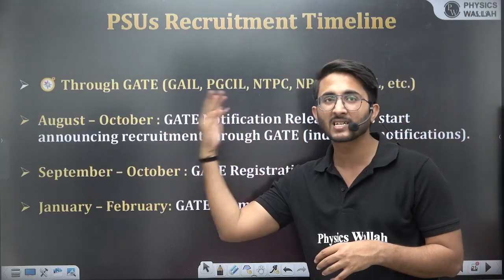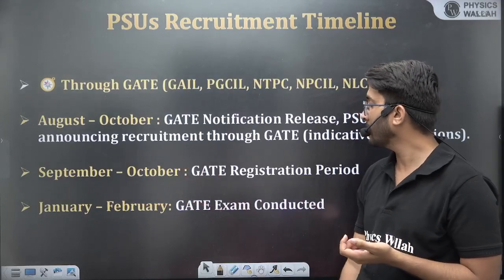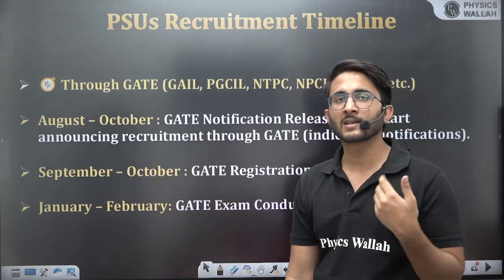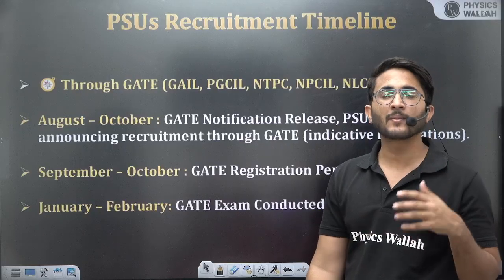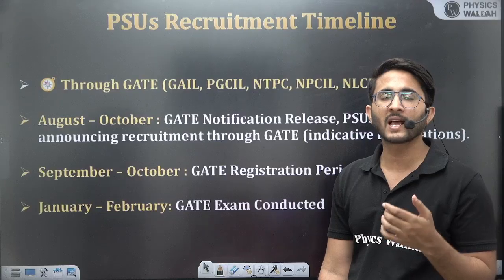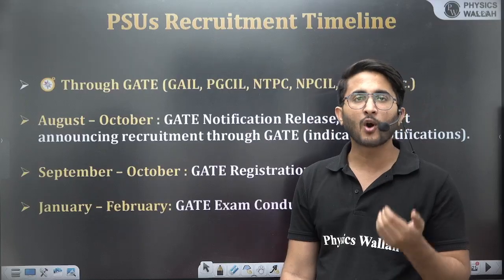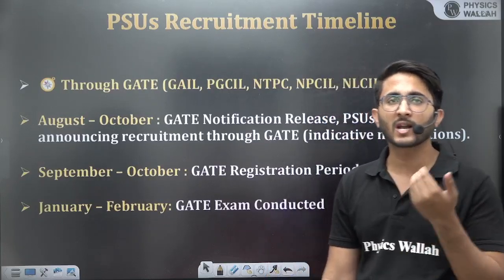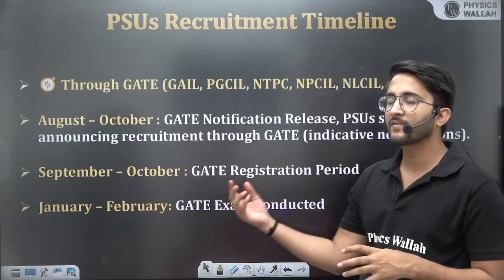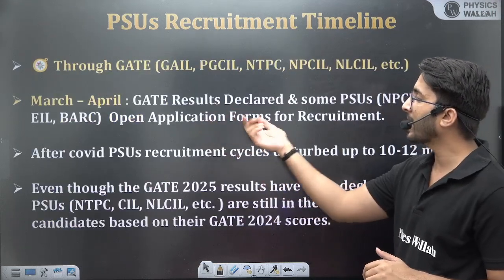From September to October, the GATE registration process is ongoing. During that time, many PSUs planning to recruit in the next year's cycle start releasing short notifications stating they will recruit based on a particular GATE scorecard and specifying which branches. After GATE examinations are conducted in January-February, results are declared in March-April.